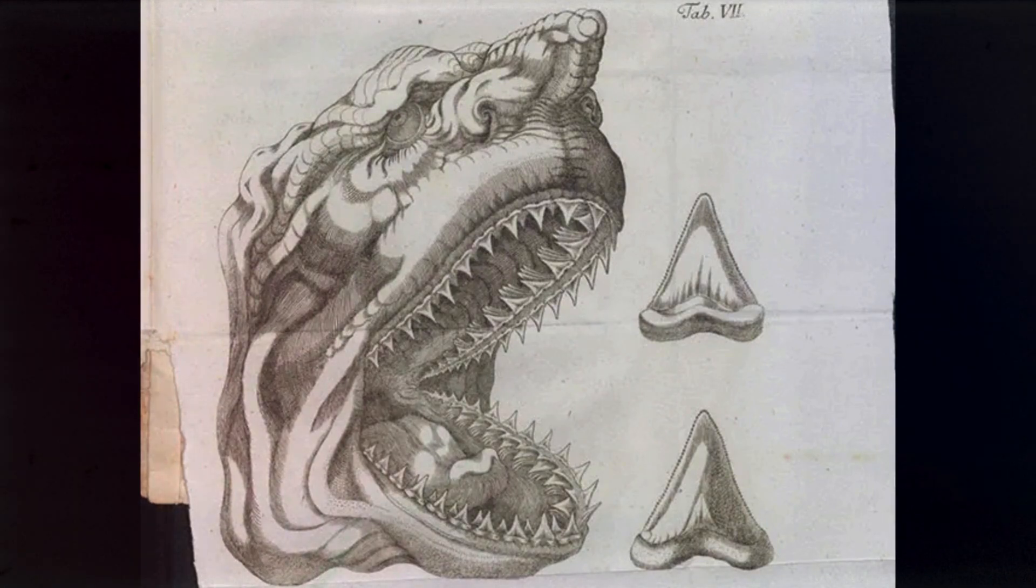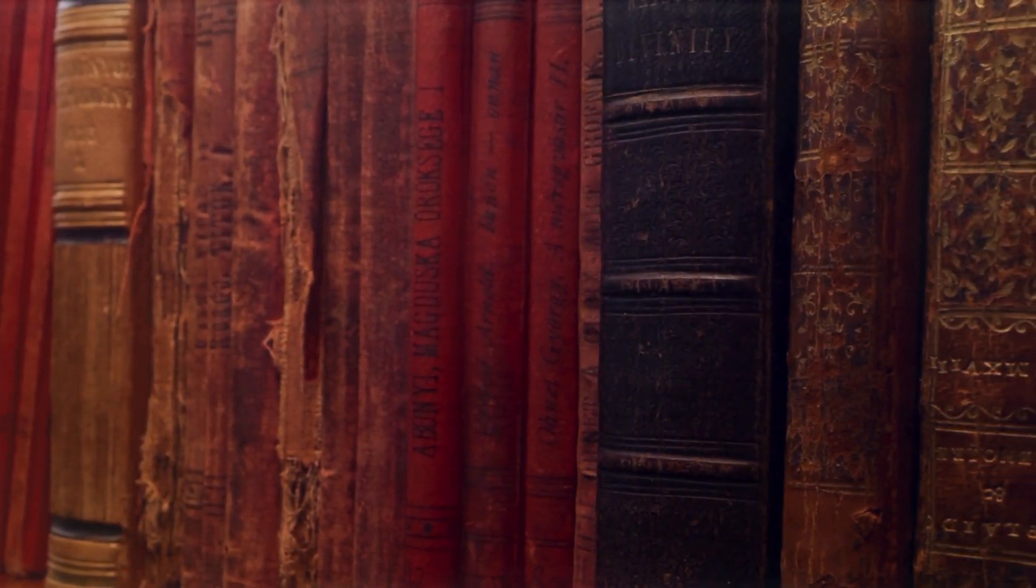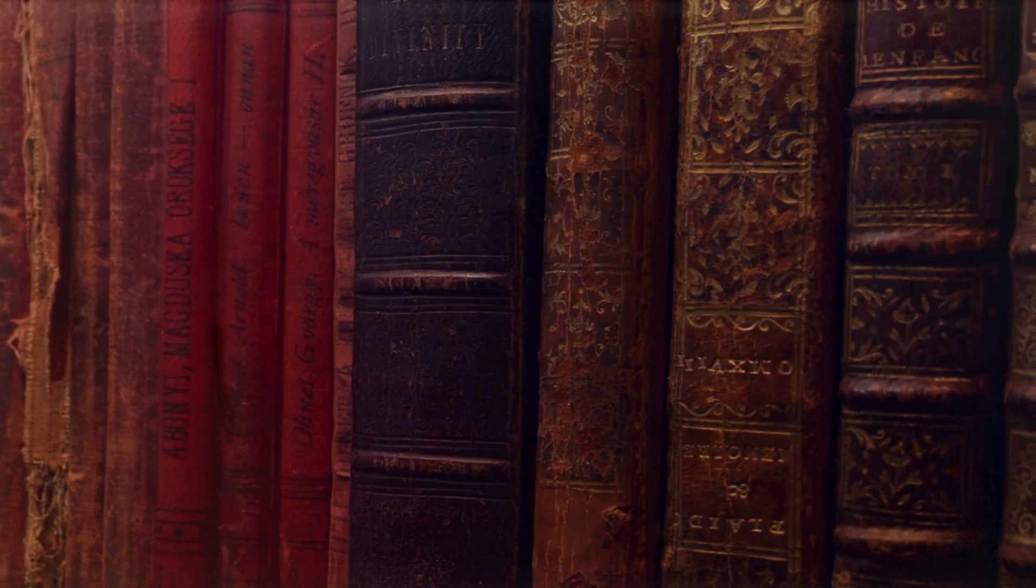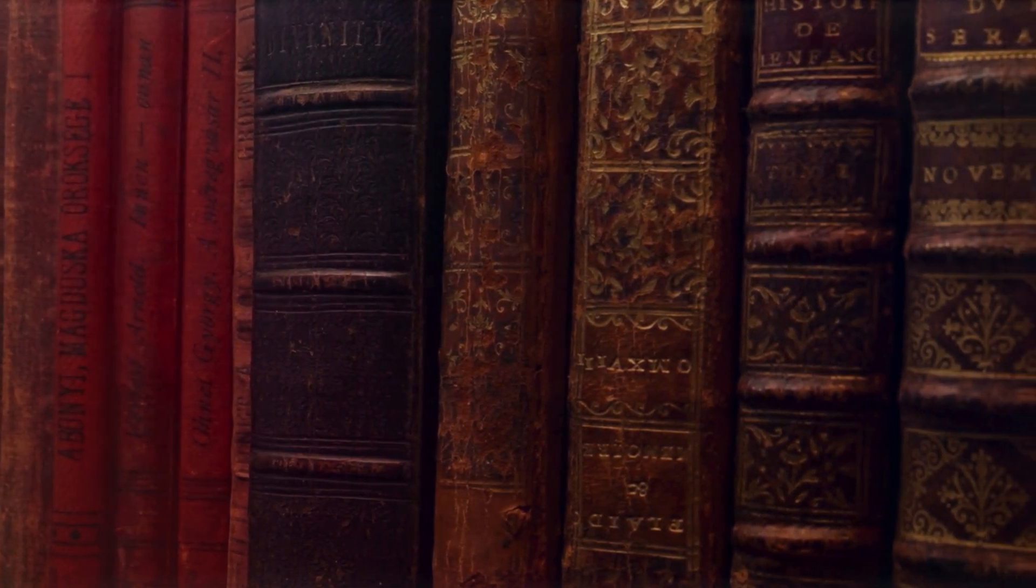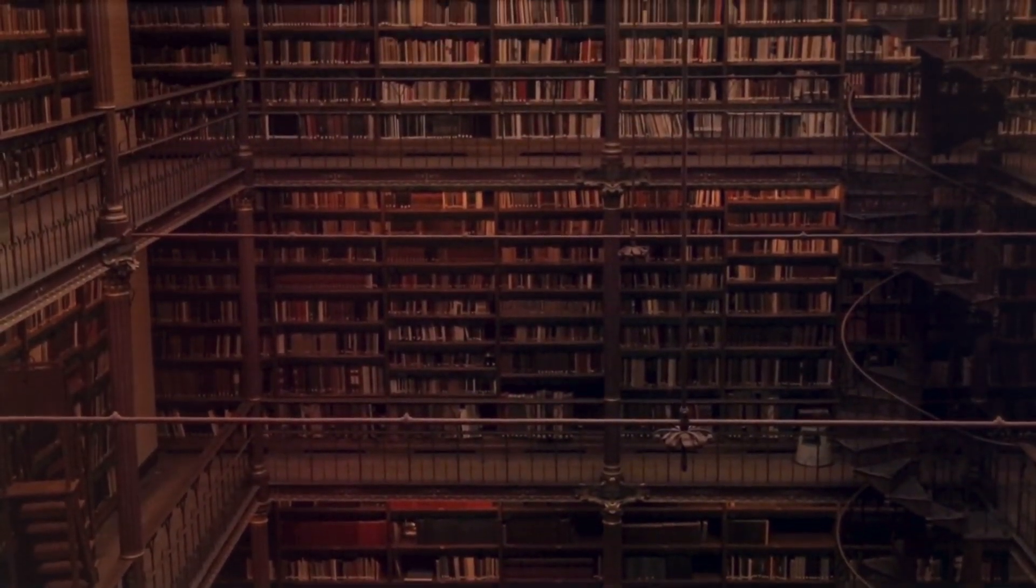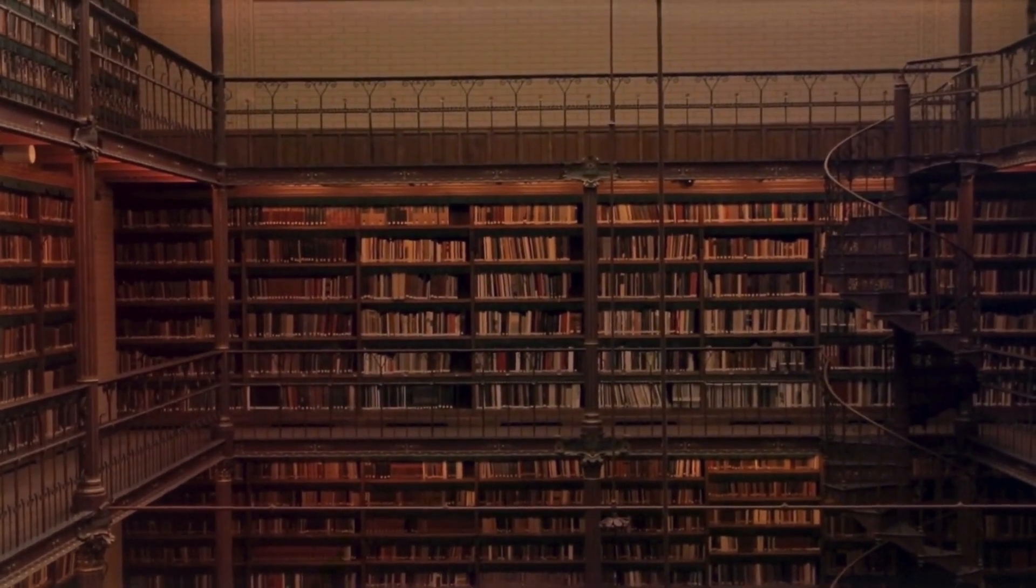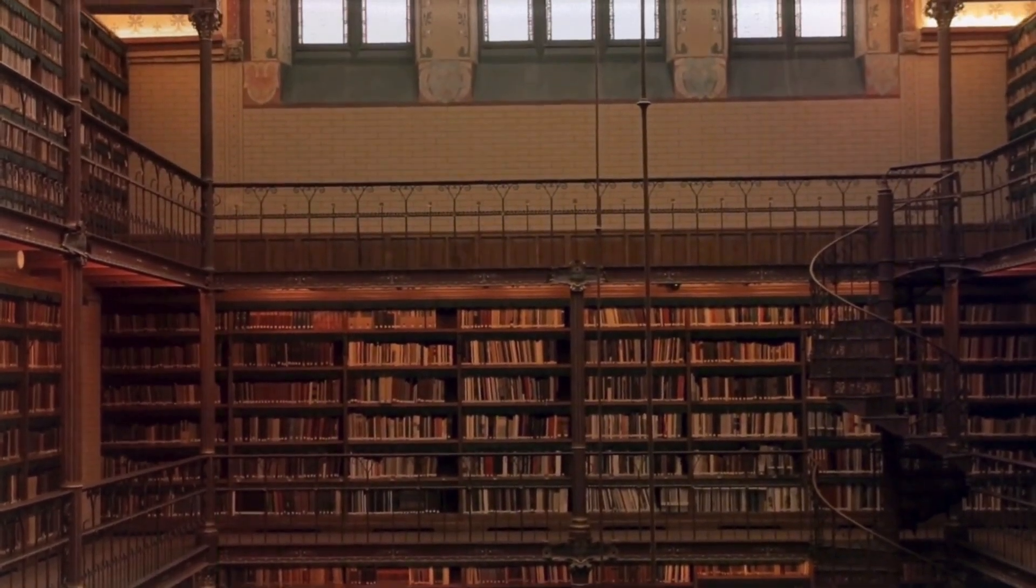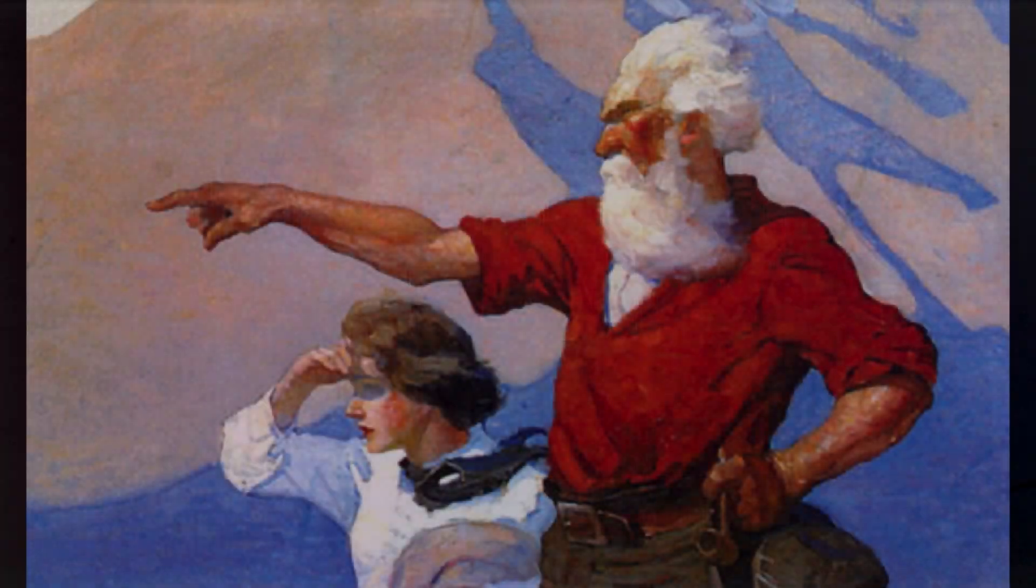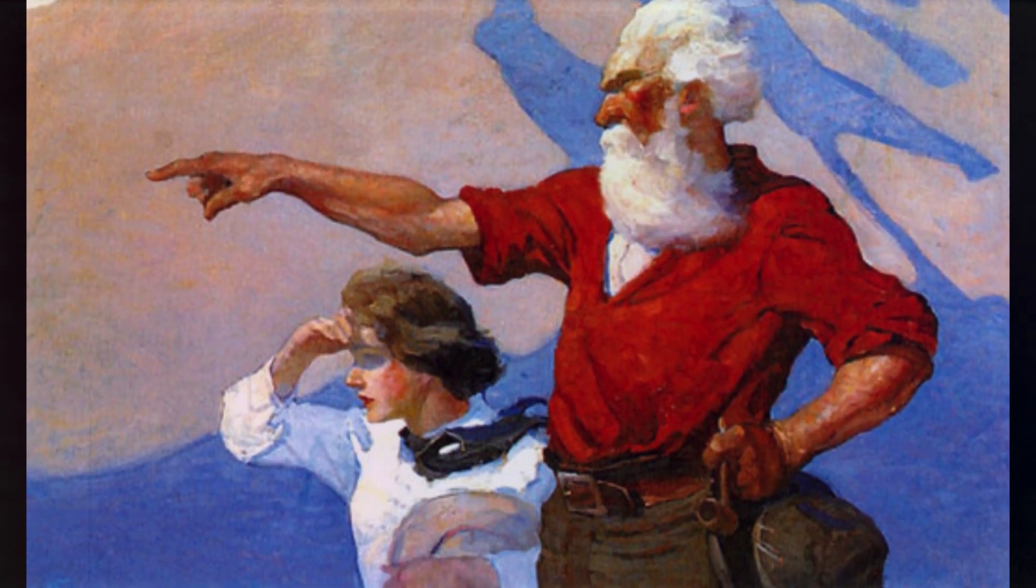Additionally, Leibniz was a visionary in the cataloguing and organisation of knowledge, advocating for a universal encyclopaedia that would systematise human understanding. His ideas anticipated modern information science, library classification and even the development of databases and artificial intelligence. These contributions reflect not just his brilliance, but his relentless pursuit of a unified intellectual system, one that sought to bridge the gap between theory and practice, between abstract reason and real world application.